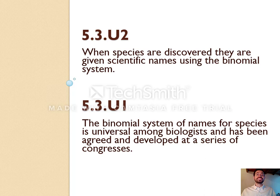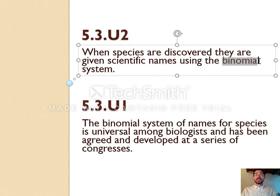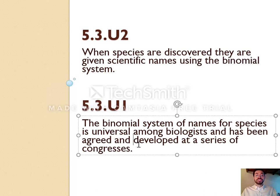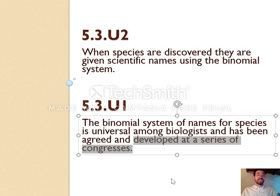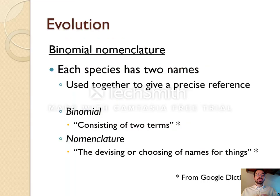When species are discovered, they are given scientific names using the binomial system. The binomial system of names for species is universal among biologists, and has been agreed and developed at a series of congresses. The word binomial means two names — this is a two-name system where scientists meet at big meetings and choose the names for every species. Each species has two names — this is their scientific name.